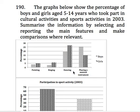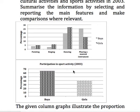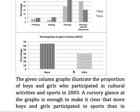This column graph shows cultural activities and this one shows sports activity in 2003. The given column graphs illustrate the proportion of boys and girls who participated in cultural activities and sports in 2003. A cursory glance at the graphs is enough to make it clear that more boys and girls participated in sports than in cultural activities.